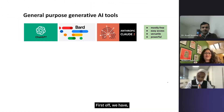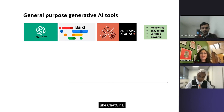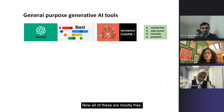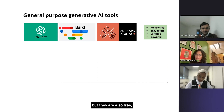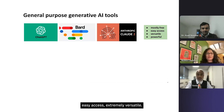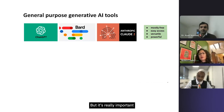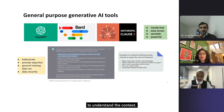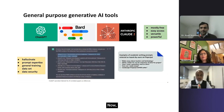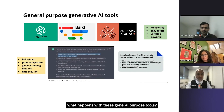First, we have general-purpose AI tools like ChatGPT, Bard, and Claude. These are mostly free — they have paid versions, but they offer easy access and are extremely versatile. You can use them to check text, generate images, code, audio — they're extremely powerful. But it's really important to understand the context.